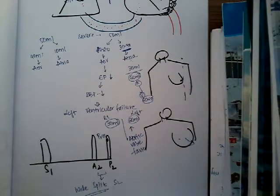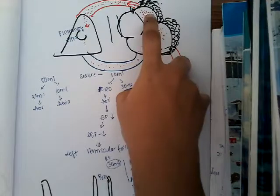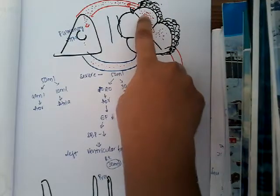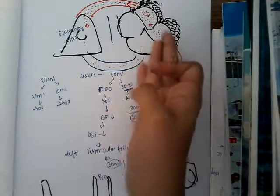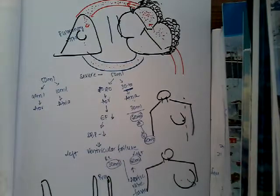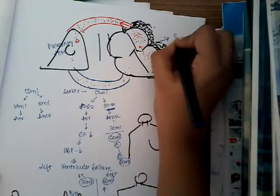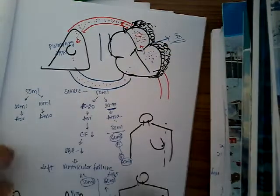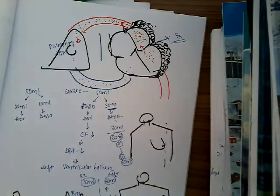One more important finding: because a large amount of blood enters from the left ventricle to the left atrium during mitral regurgitation, there is one more heart sound heard — S3. S3 heart sound is heard whenever there is backflow of blood from the left ventricle to the left atrium.